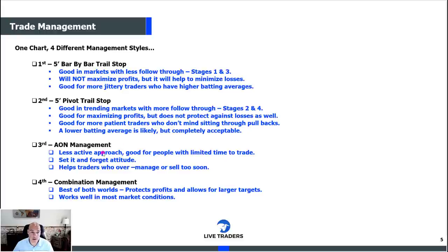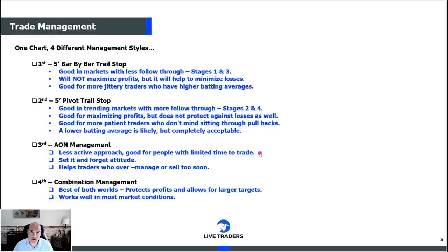All or nothing, on the other hand, is a far less active approach. It's good for people with limited time to trade. You can literally set a bracket order, get into a couple of trades, set your brackets — your target area and stop loss — and you're done. You just literally have to check your phone or come back to your desk at 3:30 or 3:45 and make an adjustment. It's more of a set-it-and-forget-it attitude. I think it helps traders from over-managing positions or selling too soon, which is an affliction that a lot of traders have.